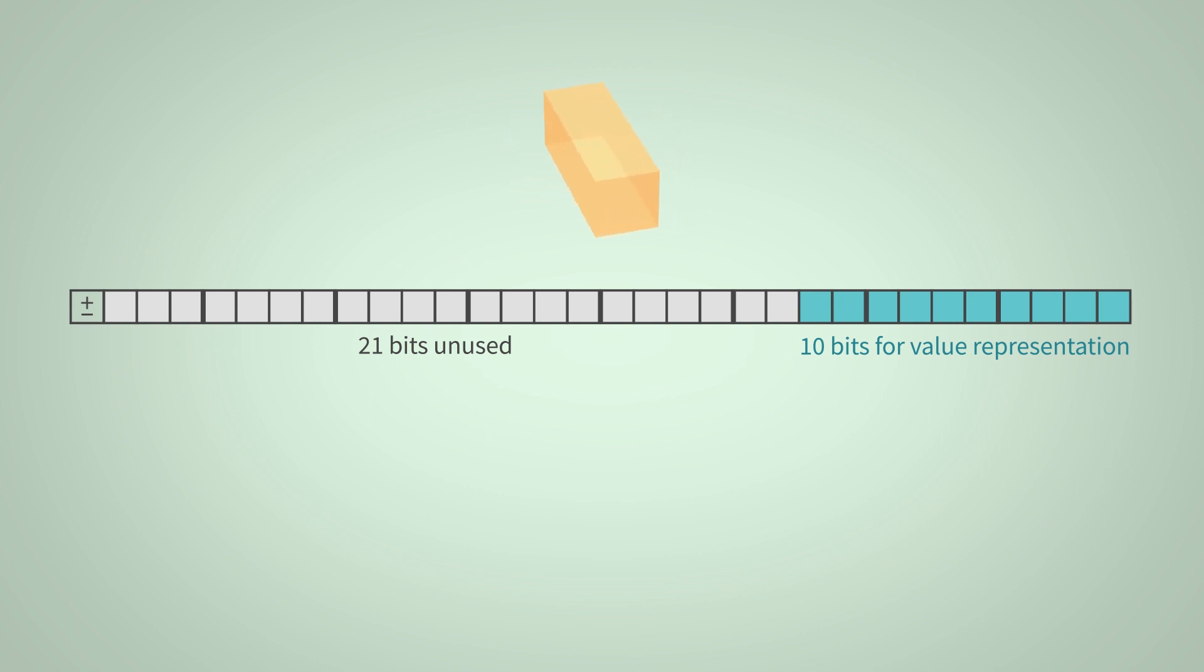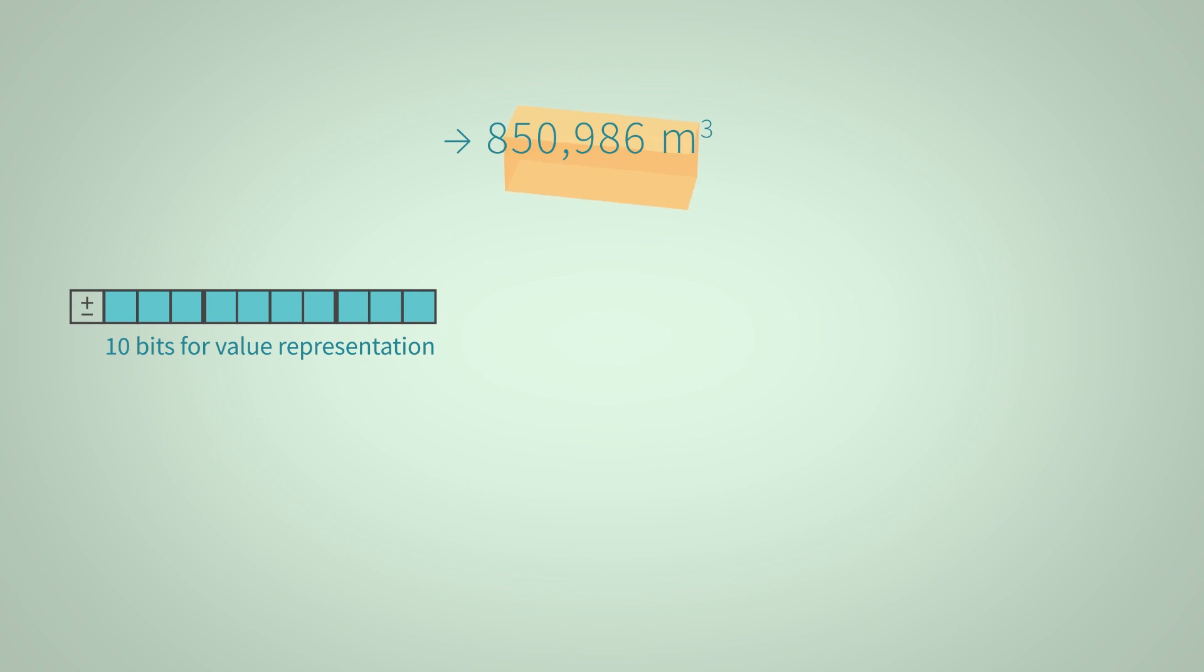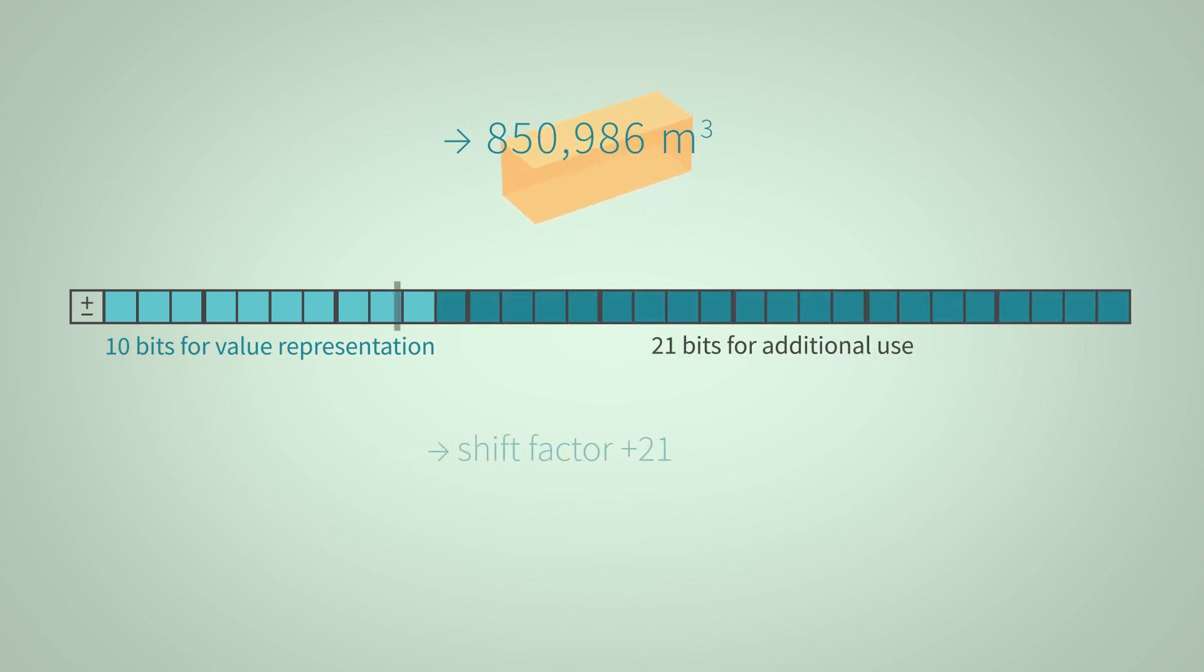Let's assume that our cuboid has a volume of 850.986 cubic meters. To represent this physical value exactly, we need a representation for the decimal places. For our convenience, we still have the 21 yet unused bits, which we can use for this purpose now. So, we shift the already used 10 bits as far as possible to the left, in order to have more digits to the right. This way we receive 21 binary digits behind the decimal point implementing a shift factor of plus 21.